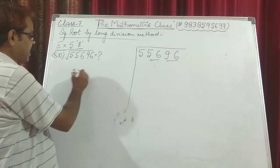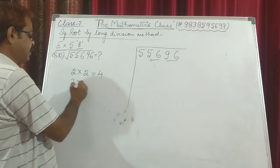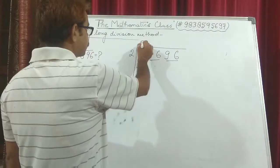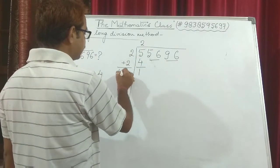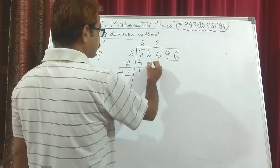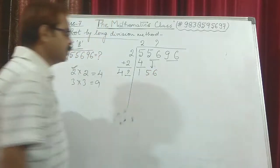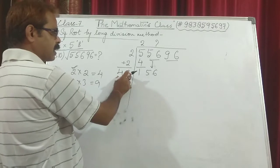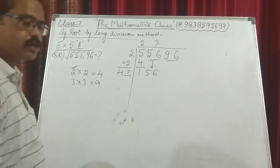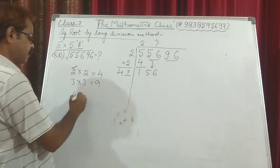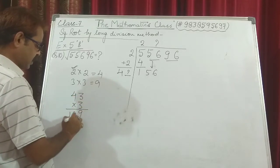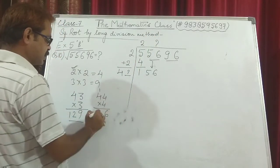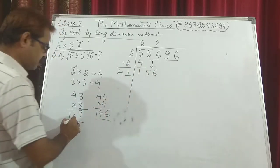We start with 5. We need a number which when multiplied by itself is either equal to 5 or less than 5. 2 into 2 is 4, and 3 into 3 is 9, so we go by 2. 2 into 2 is 4; 1 is left. This 2 is added to this 2 giving 4. We carry down the next pair 56, so the number becomes 156. We check by 3: 43 times 3 gives 129. We check by 4: 44 times 4 gives 176. Since 176 is greater than 156 but 129 is less than 156, we use 3.